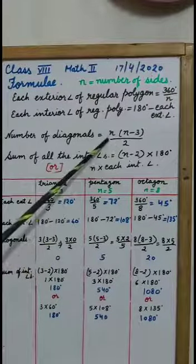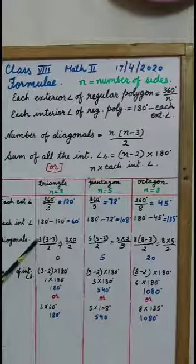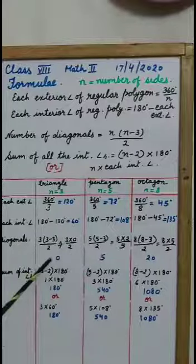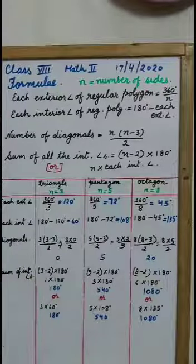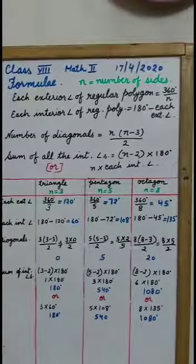Diagonals we can find by this formula. We have input the values of n here and number of diagonals are 0. Students, if you remember yesterday we have seen the triangle has 0 diagonal.